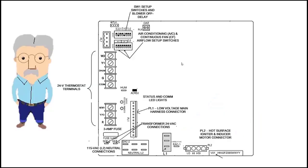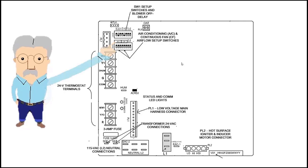All gas furnaces have a circuit board inside, and they control several functions. But the biggest function they control is the sequence of operation. Let's take a look at this circuit board real quick. Up here we have a set of dip switches, and these primarily control the blower speed, its delay, whether there's air conditioning, the continuous fan, and airflow setup switches.